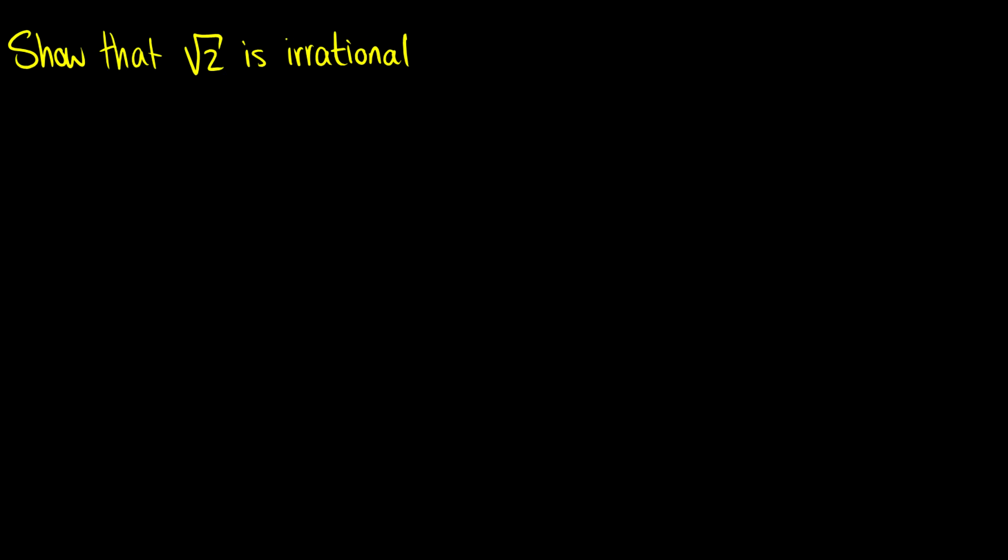Here's one you've probably seen in class: show that √2 is irrational. This is very hard to show with a direct proof, and you can't do a contrapositive proof because there's no if-then statement. So we have to do contradiction. We're going to assume that √2 is rational, which is the same thing as saying it's not irrational.